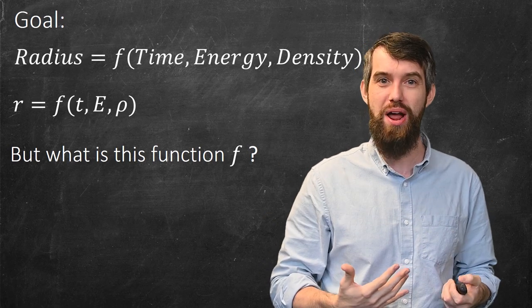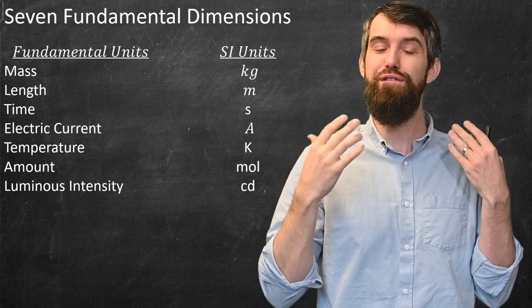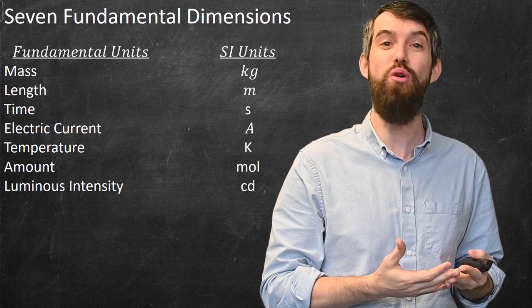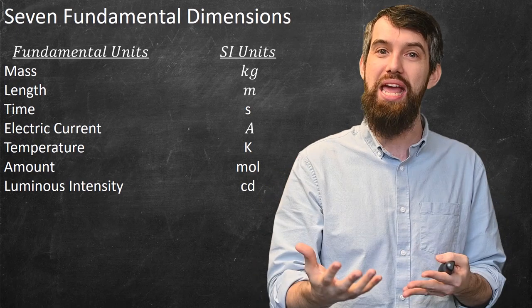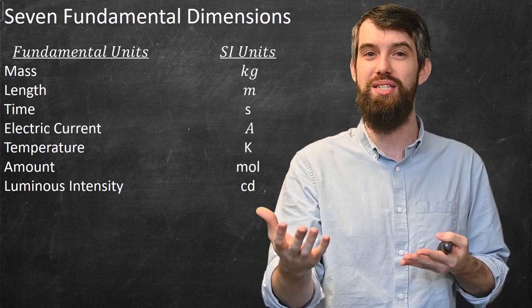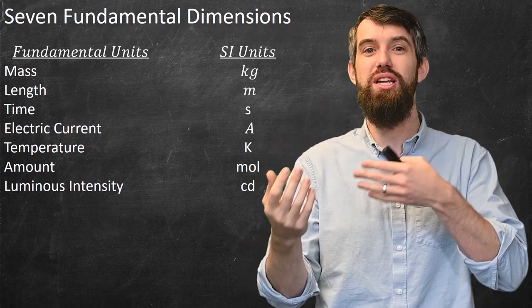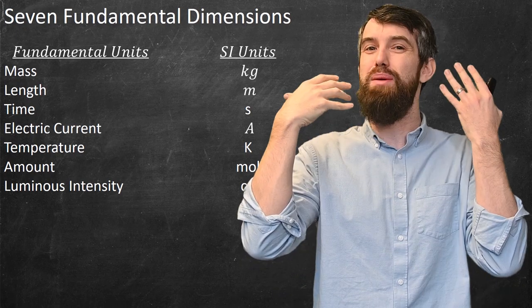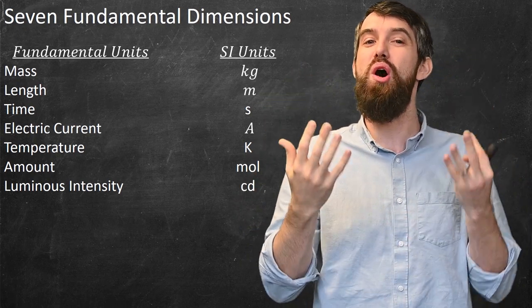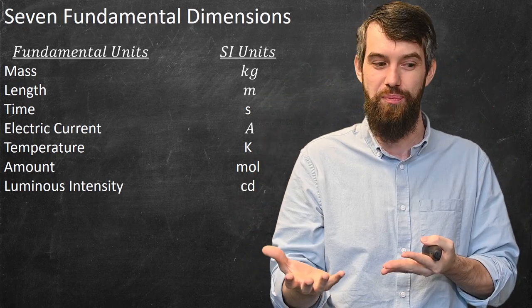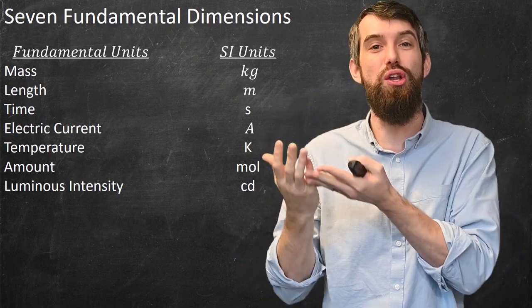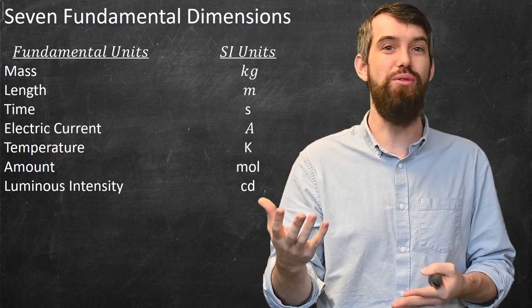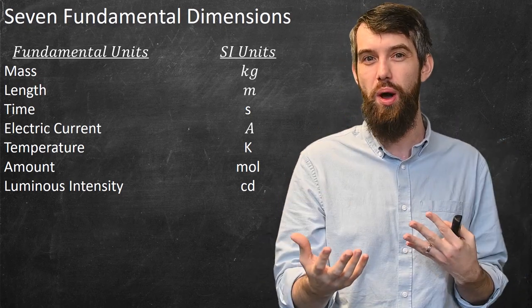So as a bit of a background, there are seven fundamental dimensions. I don't mean dimensions like spatial dimensions. I mean dimensions like units. So for example, we have mass, length, and time. Those are the most familiar ones. We also have electric current. We have temperature. We have the pure amount of something and something called luminous intensity. Each of those seven fundamental dimensions gets a particular named unit in the SI unit system. So kilograms, meters, seconds, and so on.